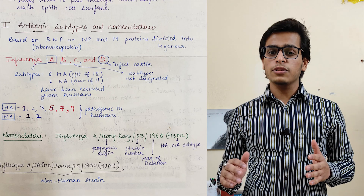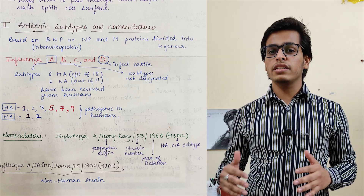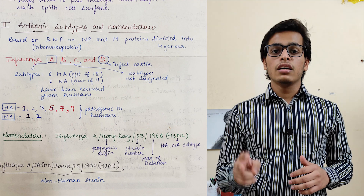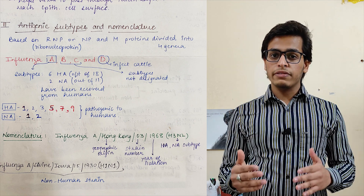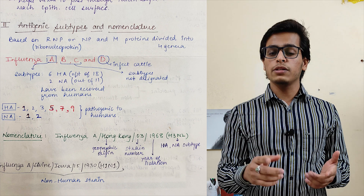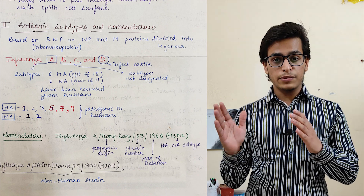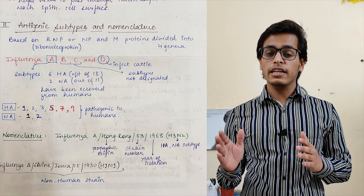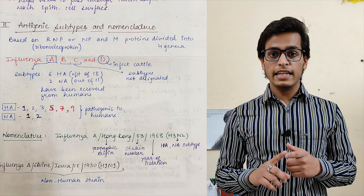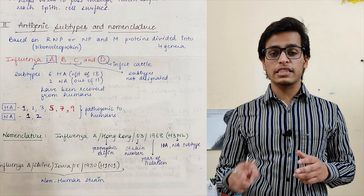If we talk about A, B, and C — B and C do not have further sub-divisions, according to Apurva Shastri 2nd edition. Influenza A has been divided further on the basis of its envelope proteins HA and NA. HA is of 18 types in total, but only 6 infect humans. NA is of 11 types, but only 2 infect humans.